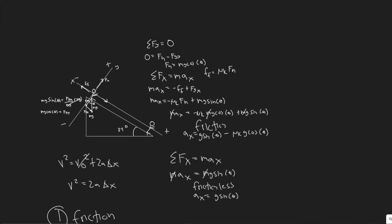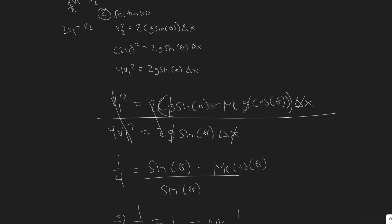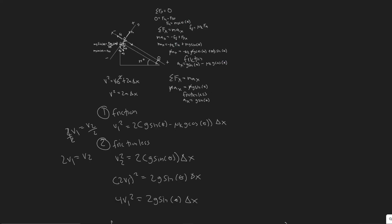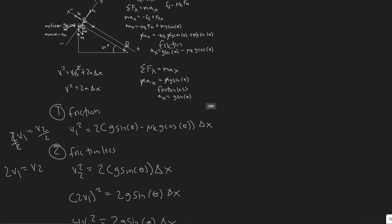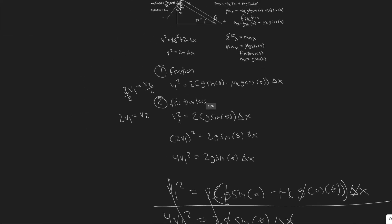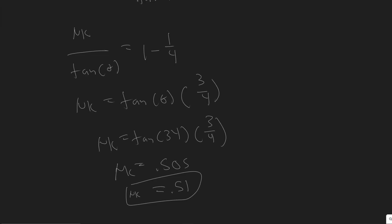To summarize: we needed the velocity for both scenarios to cancel out. We summed forces to get acceleration in each case, then used kinematics to express velocity. Using the condition that v1 = v2/2 (i.e., 2v1 = v2), we divided the two equations to eliminate unknowns and solved for μk = 0.51.